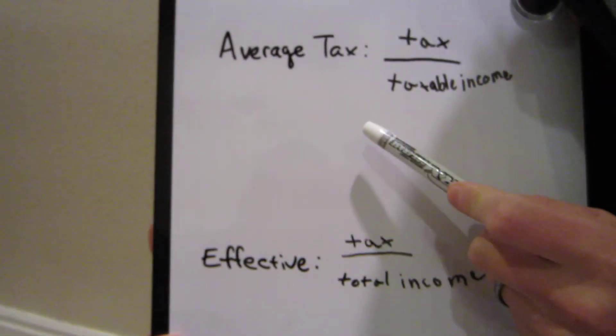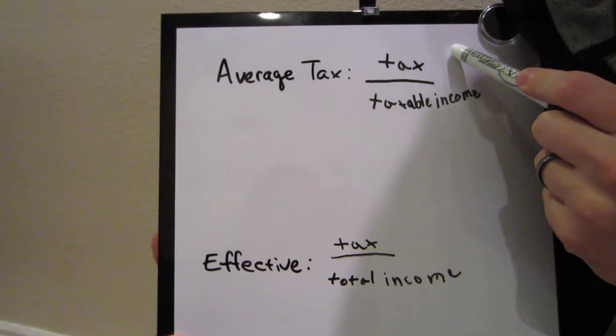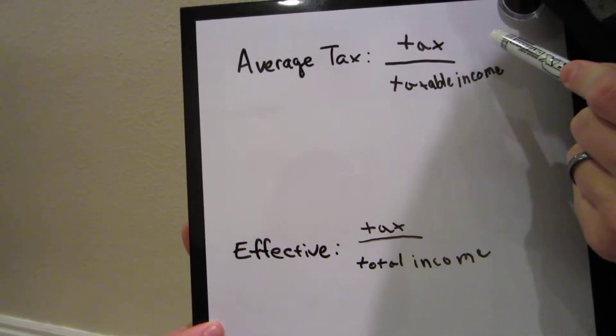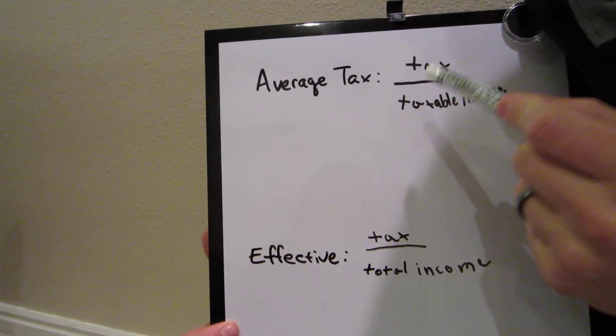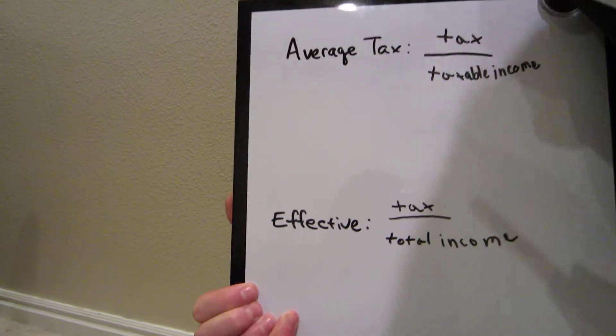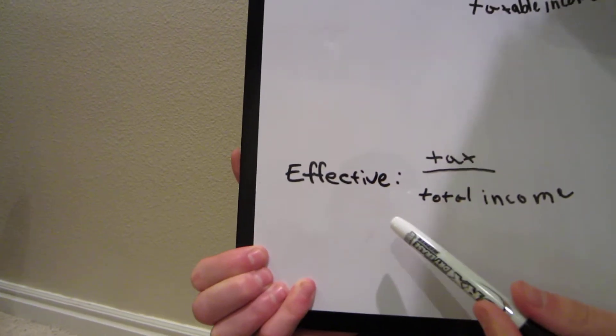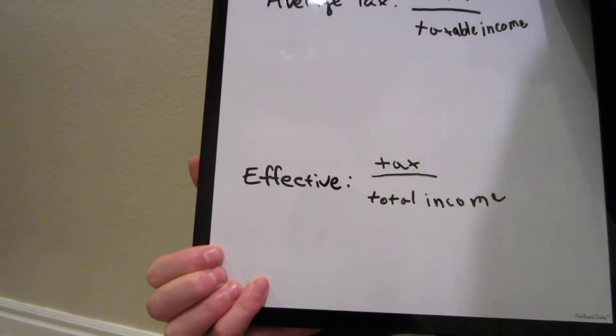Your average tax is your tax amount divided by taxable income. Your effective tax is your tax divided by your total income.